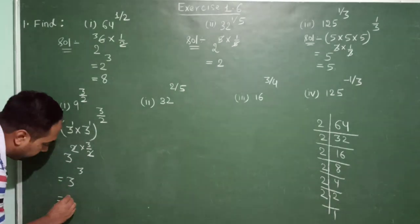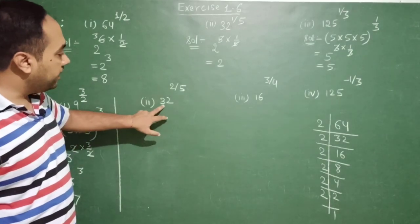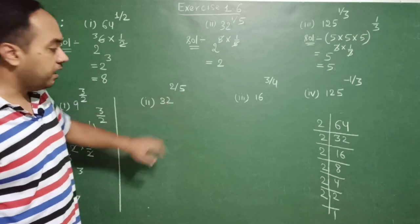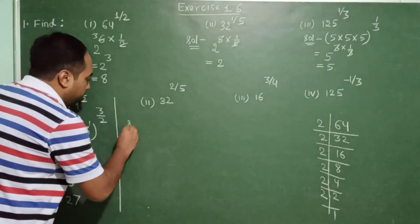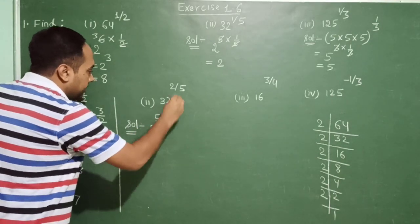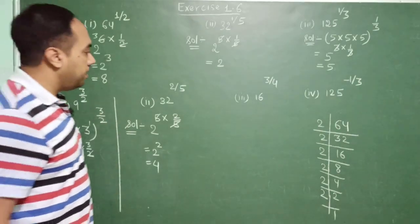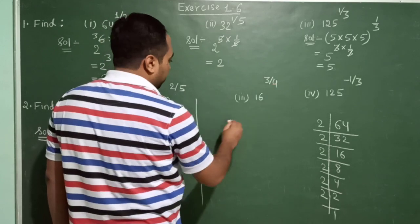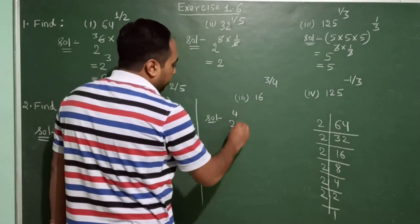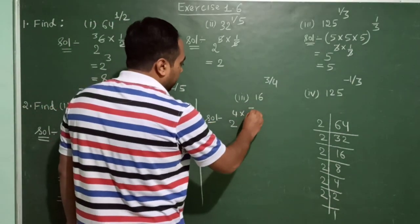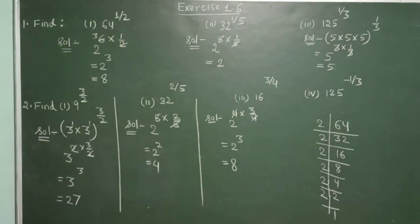3 raised to the power 3 is 27. The second one: 32 raised to the power 2 upon 5. We write 32 as 2 raised to the power 5, and outside it is 2 upon 5 — the 5s cancel, giving 2 power 2, which equals 4. The third one: 16 raised to the power 3 upon 4. The prime factors of 16 are 2 repeating 4 times, so 2 power 4. Outside it is 3 upon 4 — cancel 4 and 4, giving 2 power 3, which equals 8.